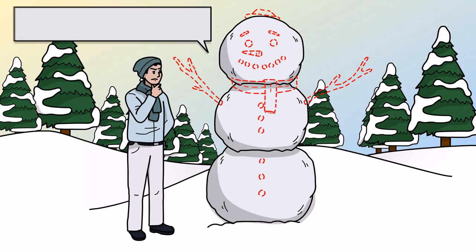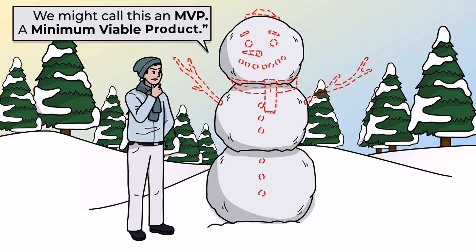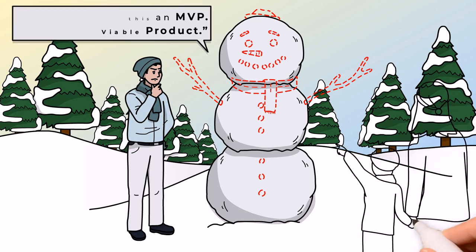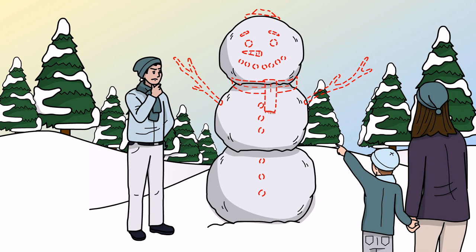But is it really a snowman? We might call this an MVP, a minimum viable product. Someone walking by might recognize this as a snowman. They might even stop and say how nice your snowman looks.